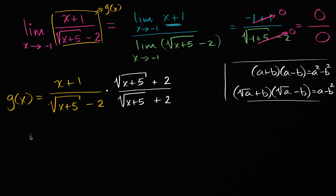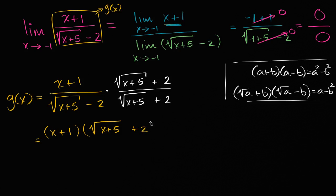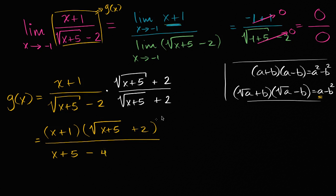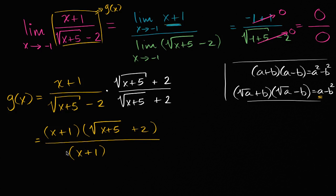This gives us x plus one times the square root of x plus five plus two in the numerator. The denominator becomes the square root of x plus five squared, which is x plus five, minus two squared, which is four. So the denominator simplifies to x plus five minus four, which is just x plus one. Both numerator and denominator have x plus one, so we can simplify: g of x equals the square root of x plus five plus two.